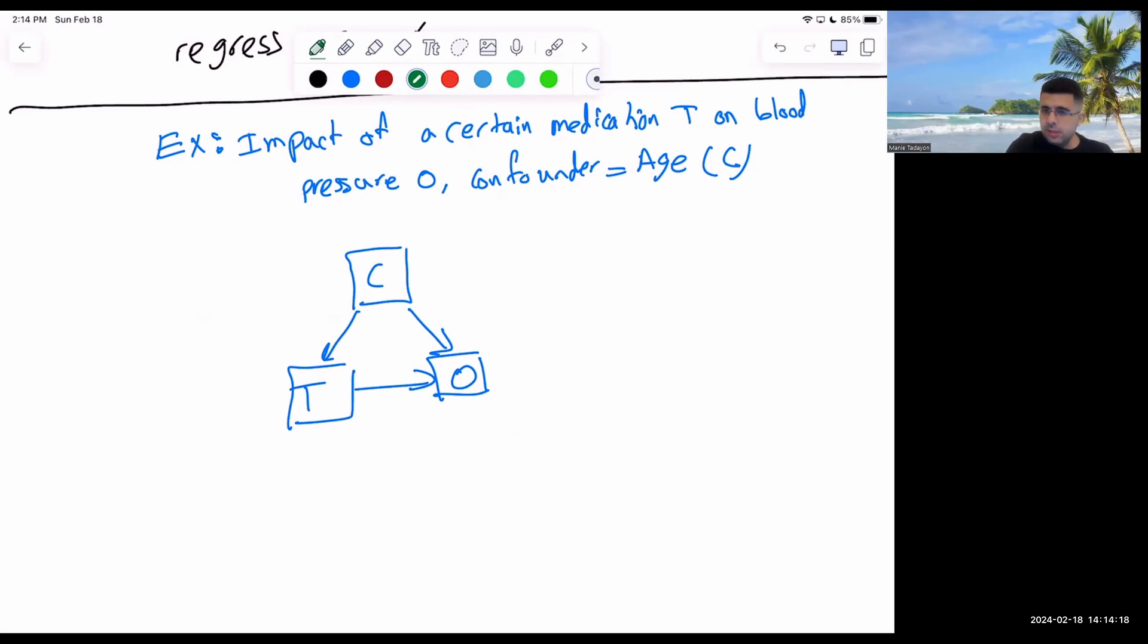Using the language of causal graph, that's how you denote this. C is the confounder, which is the parent of both treatment and the outcome. Now, let's write some equation here as a form of regression, how we represent this one.